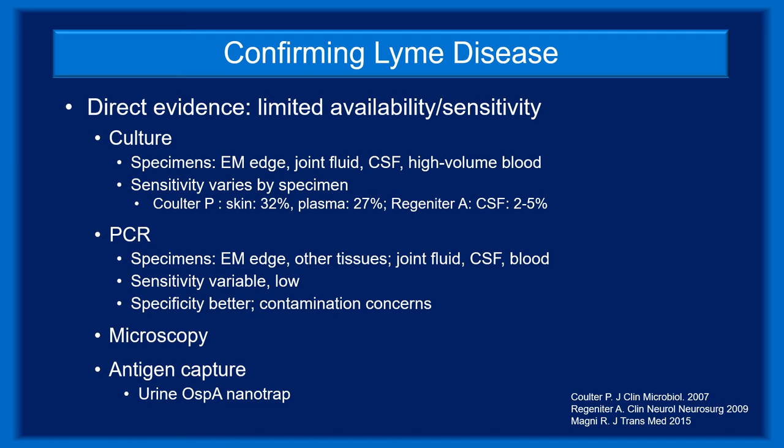Research labs have been able to culture Borrelia burgdorferi from a variety of specimens, including the leading edge of erythema migrans lesions, joint fluid, CSF, and high-volume blood specimens, though sensitivity varies and is generally low. Specimens from those sites have also produced positive PCR results. PCR tests for joint fluid and CSF are clinically available, but PCR testing is not FDA approved. Procedures and probes have not been standardized and vary by lab. Sensitivity is variable and often low, specificity may be higher, but contamination is a concern.